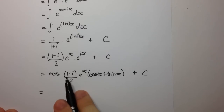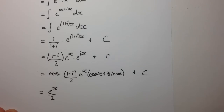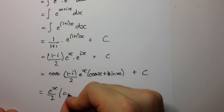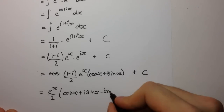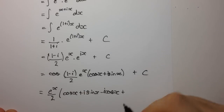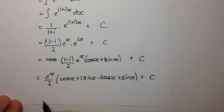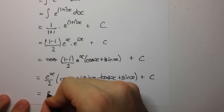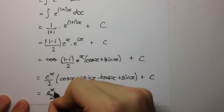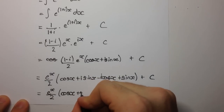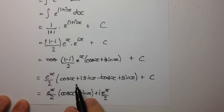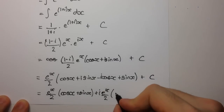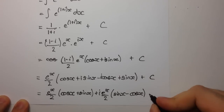Now let's expand these brackets, leaving e to the x over 2 out the front. Expanding gives cos(x) plus i·sin(x) minus i·cos(x), and then minus i squared — which is plus 1 — times sin(x), plus c. Collecting real and imaginary parts, we get e to the x over 2 times (cos(x) plus sin(x)), plus e to the x over 2 times i times (sin(x) minus cos(x)), plus c.